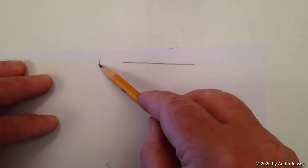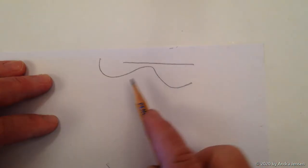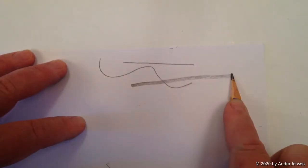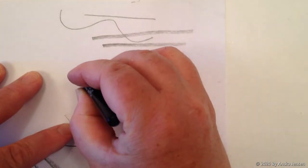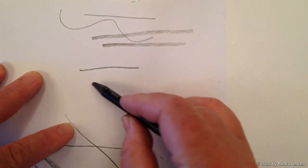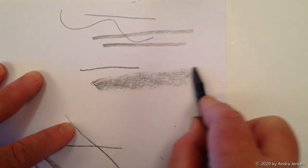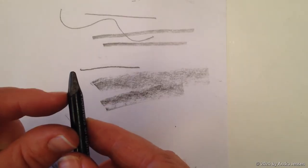With normal graphite pencils you can get narrow lines, and then if you use it on its side you can get a wide line but no wider than that. With a woodless graphite pencil you have even more versatility. You can get a narrow line but then you can also get a really wide line, as wide as the whole length of this.